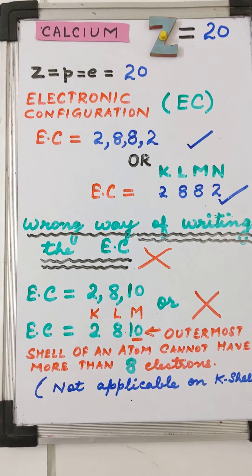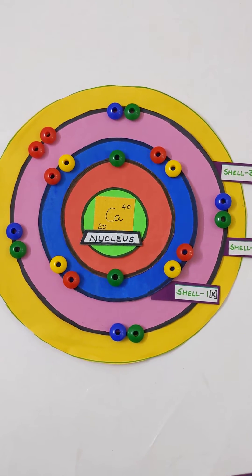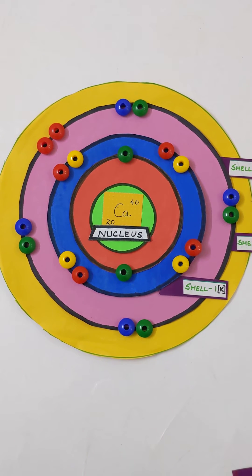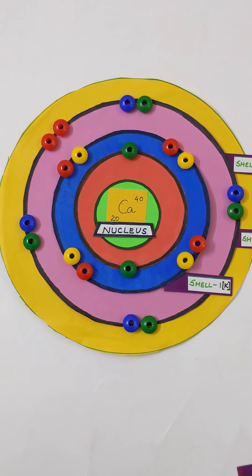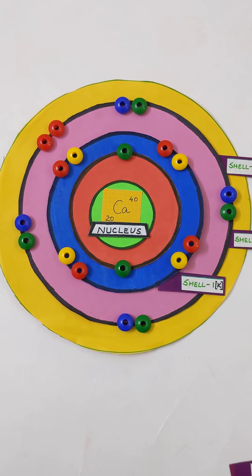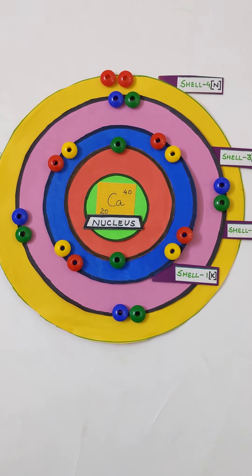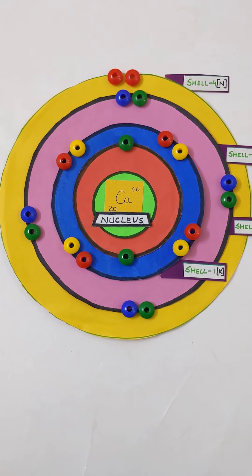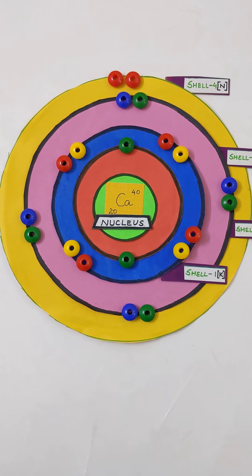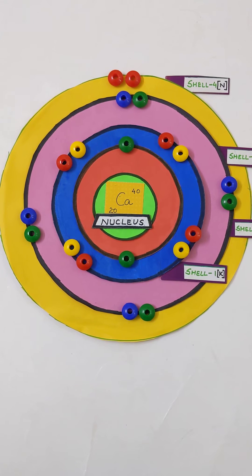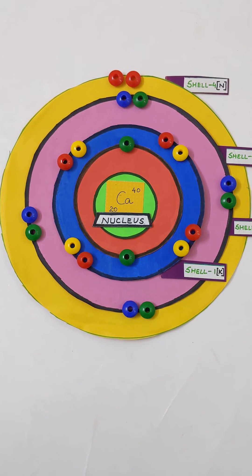Let us try to understand this with the help of orbital structures. If we make an arrangement of electrons in calcium with 2 electrons in the K shell, 8 electrons in the L shell, and 10 electrons in the M shell — this is absolutely incorrect, since the outermost shell can never have more than 8 electrons in it. So we cannot arrange the electrons in this manner. Therefore, the only correct way of representing the electronic configuration for calcium is: 2 electrons in the K shell, 8 electrons in the L shell, 8 electrons in the M shell, and the remaining 2 electrons in the N shell. Because now the outermost shell is not having more than 8 electrons in it.